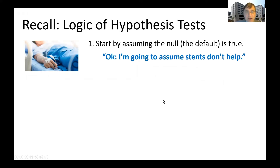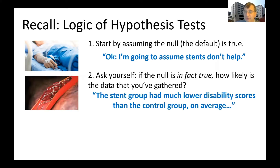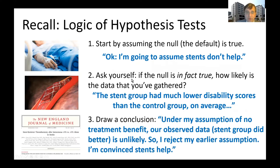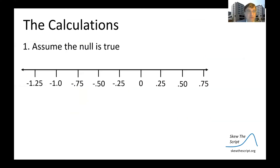Recall the logic of hypothesis tests. We start with the null — assuming stents don't help — and ask: if the null is in fact true, how likely is it that the stent group had much lower disability scores than the control group on average? Under the assumption of no treatment benefit, we hope our observed data is unlikely, so we reject the earlier assumption and are convinced stents help.